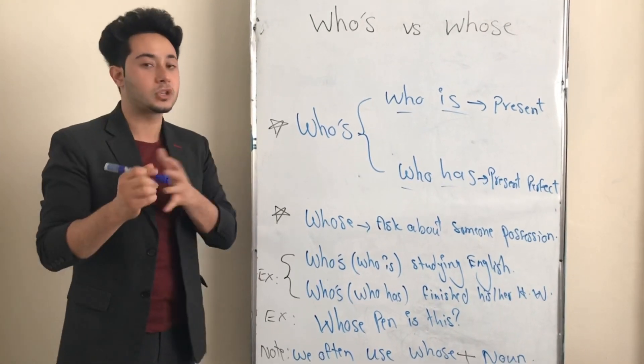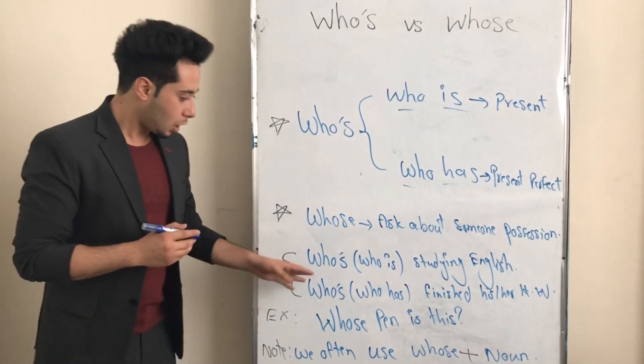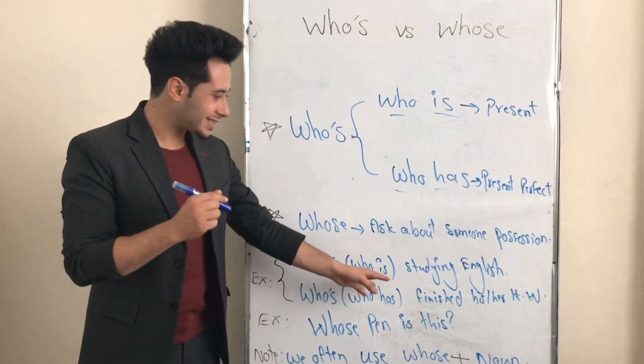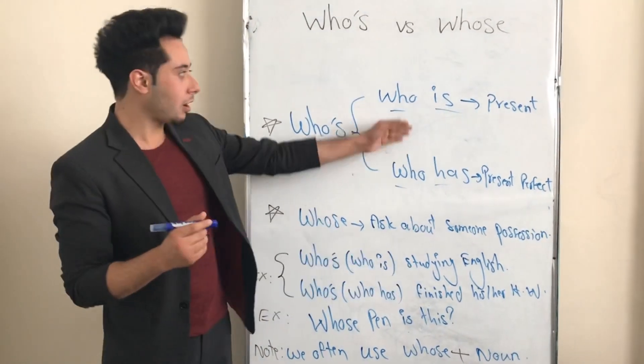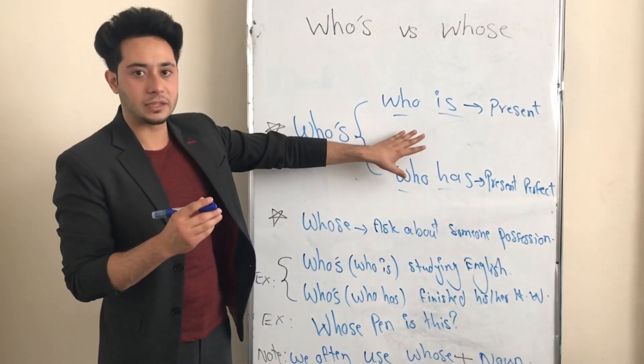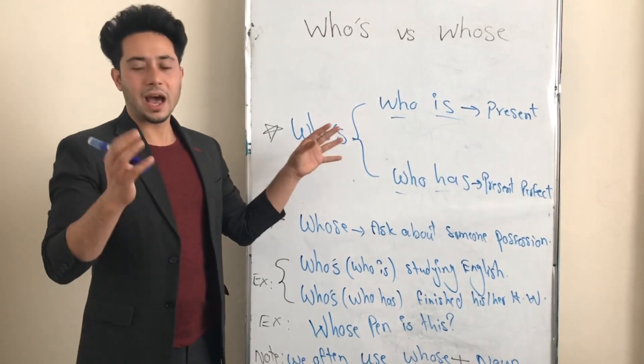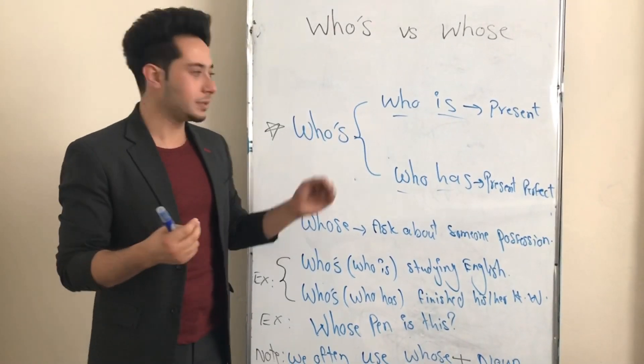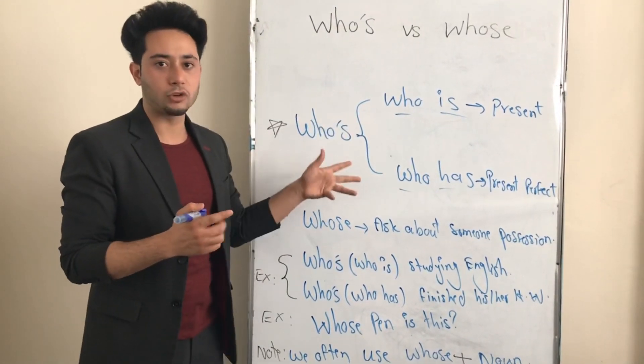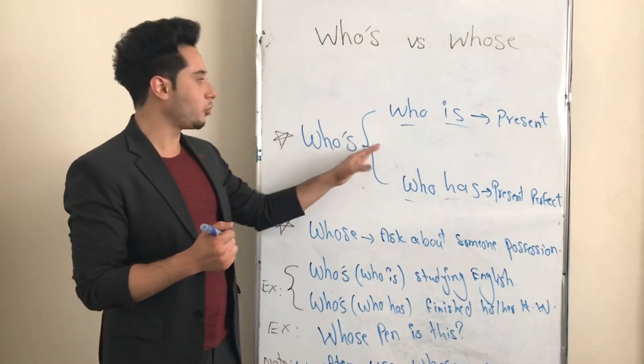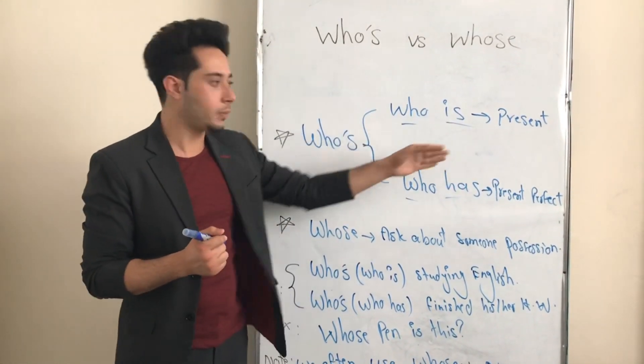For example, who is studying English? Something that I already wrote down here. My dear old friends, who's has two full forms. It means this is the contracted form of two other forms. We consider the full form of who's as 'who' with the verb 'to be', and also 'who' with the verb 'to have', or who with has.